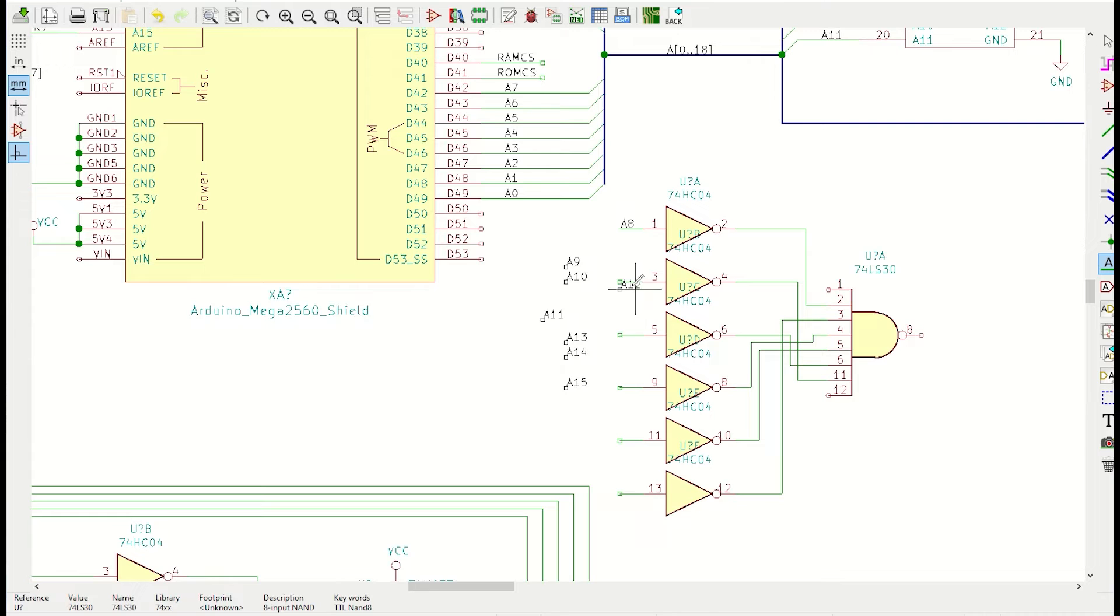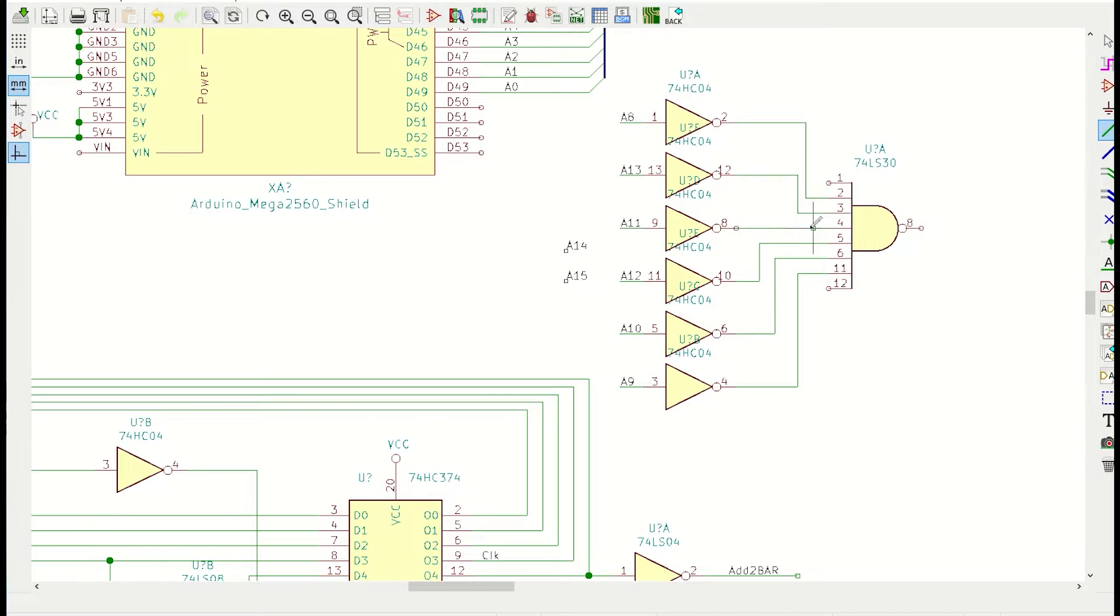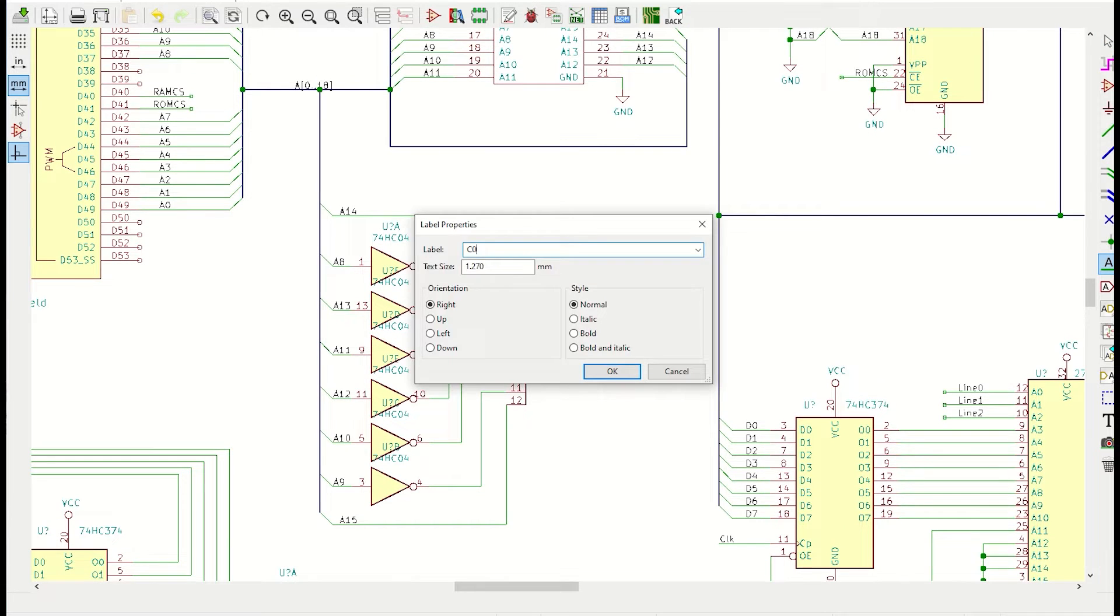Label all the signals. I'm going to reorder the position of the inverters. Now, this is completely unnecessary from a functional perspective, but it makes the schematic easy to look at. It's already starting to look better. The other two bits go directly to the NAND gate, and the whole thing is connected to the address bus. Label the output.